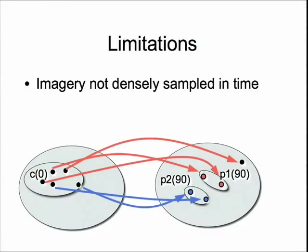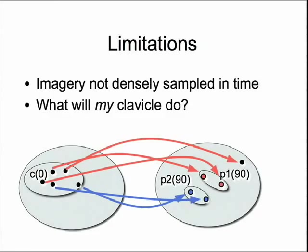One limitation of this web-driven enterprise is that the imagery is not densely sampled in time — you can't follow someone's clavicle over 90 days; they didn't image it every day, and even if they did, they probably didn't upload it every day. There's also the basic question of what exactly my clavicle will do. Given these observations, it would be nice to have some predictive value for my particular case. It could be that my case is an outlier and the outcome will differ from what I've observed.